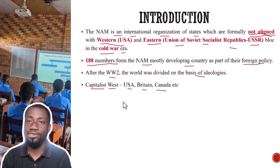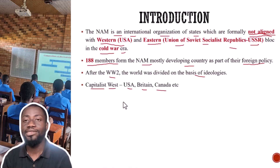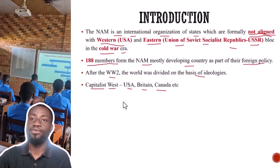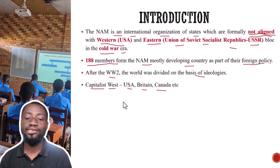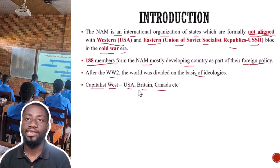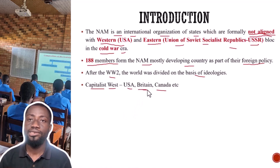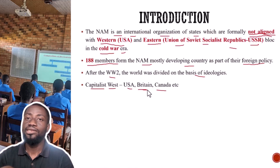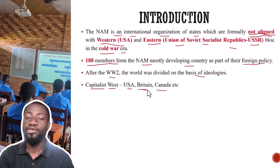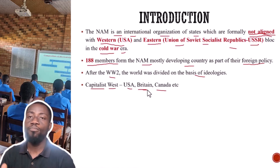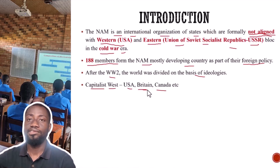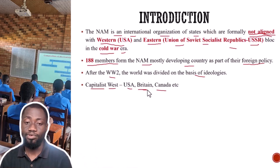Capitalism has to do with private participation in the production of goods and services. In simple terms, these countries encouraged private people to get involved in the production of goods and services — to set up industries and open up jobs for the citizens. That is what capitalism is all about: private participation.